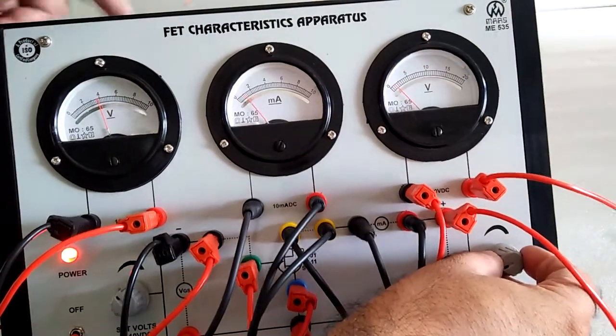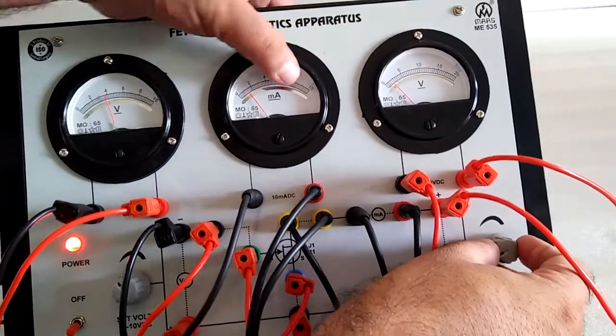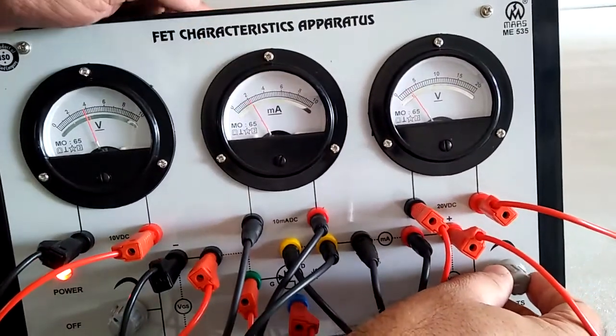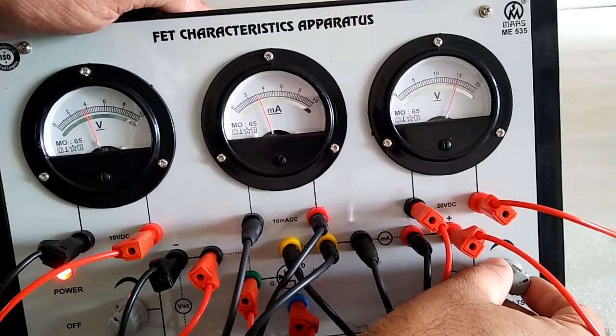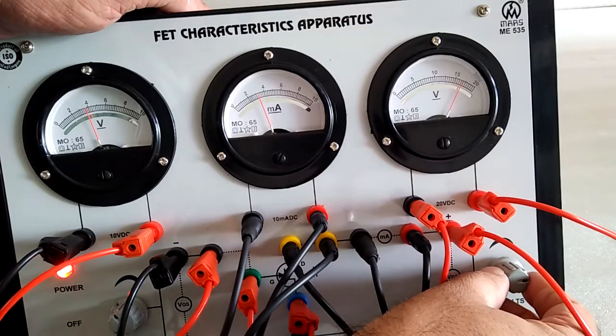Increase the VGS. Note down this voltage and current, and you see current is stagnant, stopped. But voltage of VDS is increased.